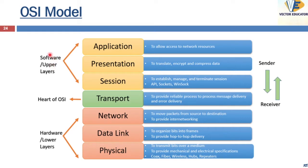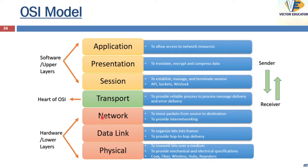Similar to a traditional method of writing a letter, in the OSI model we have layers responsible for upper-layer work, as seen in the previous diagram. There is a layer that is the heart of the OSI — the transport layer — and we have the lower layers. This model defines the protocols, that is the set of rules for network communication. Each layer — the physical layer, data link layer, network, transport, session, presentation, and application — has its specific task and cooperates with the layers above and below, transferring data between them.